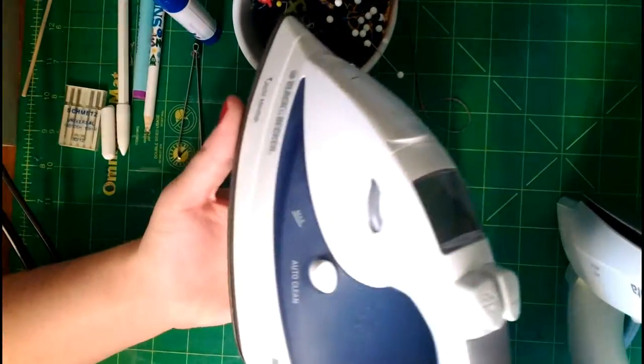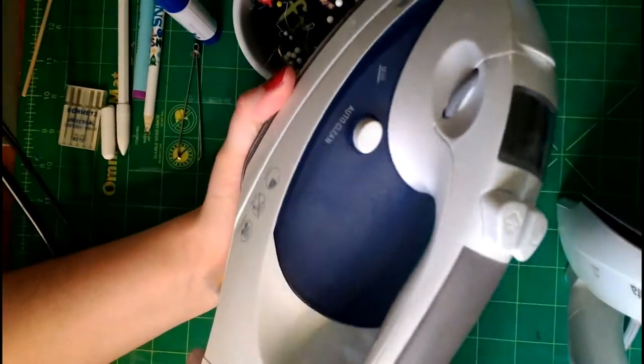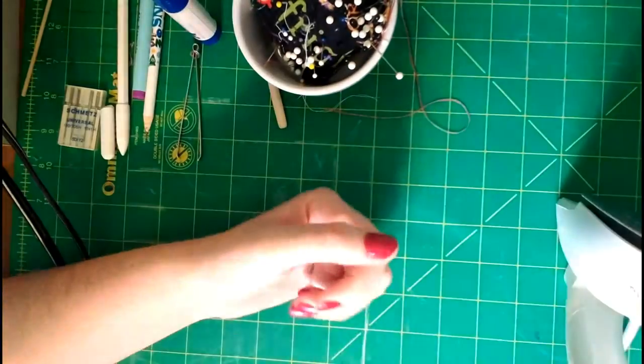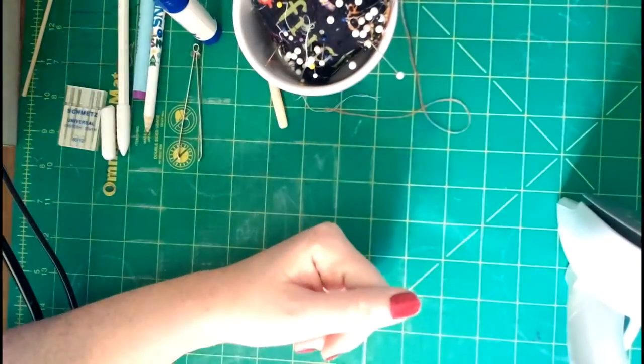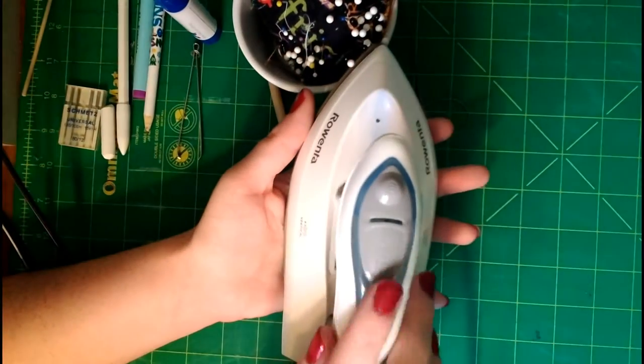This one is a Black & Decker. It's a heavier iron and really helps with getting through multiple layers of fabric. But I definitely like my little travel iron the best.